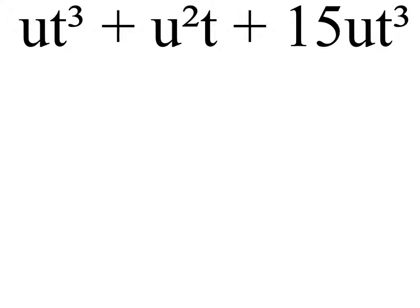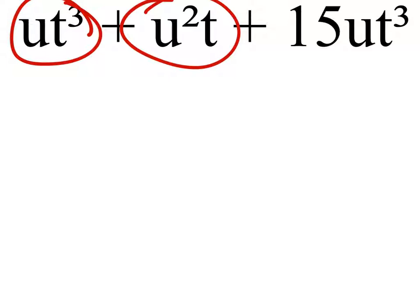So I have ut cubed plus u squared t. Just starting off, these two terms are not like terms because the u's and the t's have different exponents.